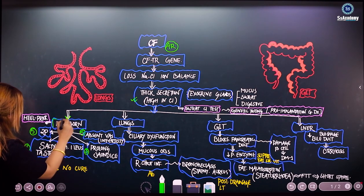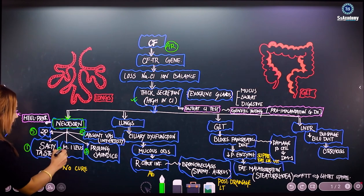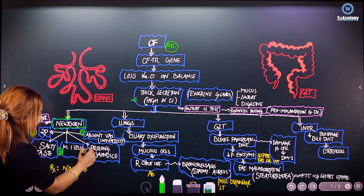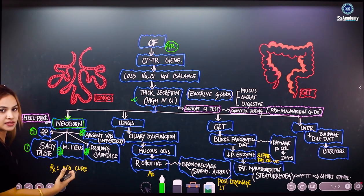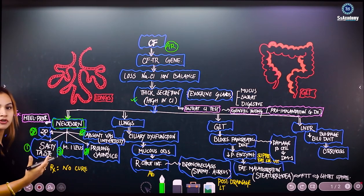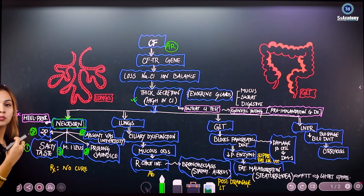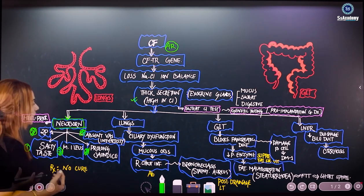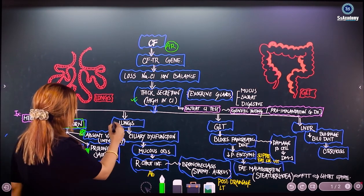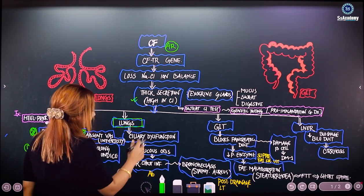To sum up the newborn findings: first is salty taste; second is meconium ileus or small bowel obstruction; third is prolonged jaundice; fourth is absent vas deferens or infertility; and fifth is the two P's — nasal polyps and rectal prolapse.